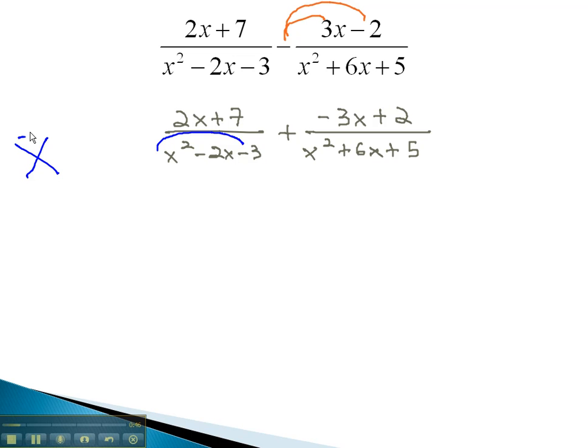The first denominator, using the AC method, we must multiply to negative 3 and add to negative 2. This is negative 3 and positive 1. We have x minus 3, times x plus 1.